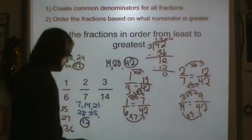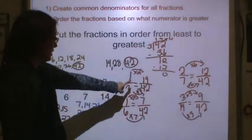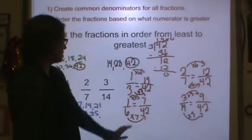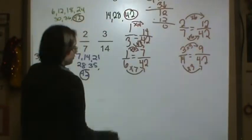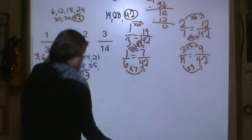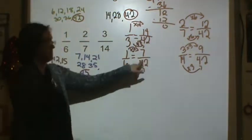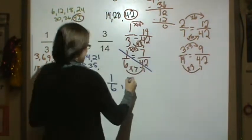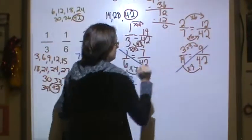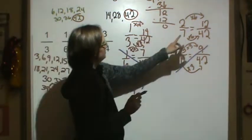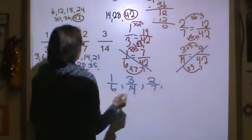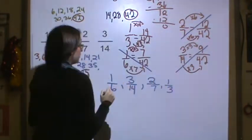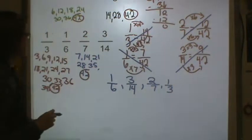Now I can put these fractions in order from least to greatest. My smallest fraction is 1/6 because that's equal to 7/42. So 1/6 is first. Next is 9/42, which is 3/14. Then we have 12/42, so that would be 2/7. And last we have 1/3 is my greatest amount, which was equal to 14/42.